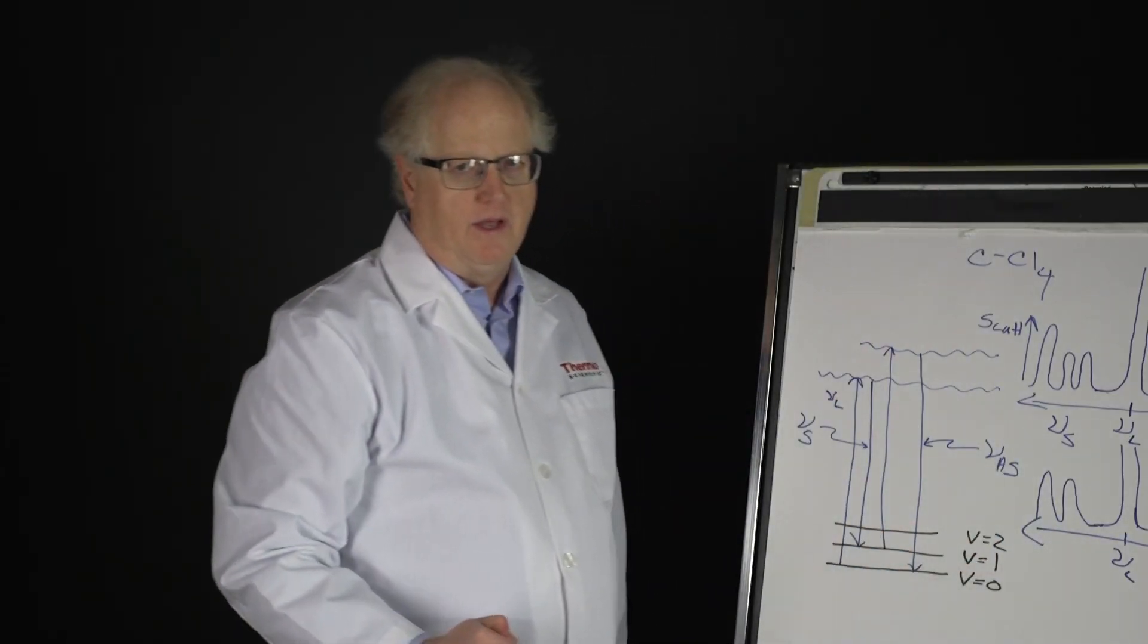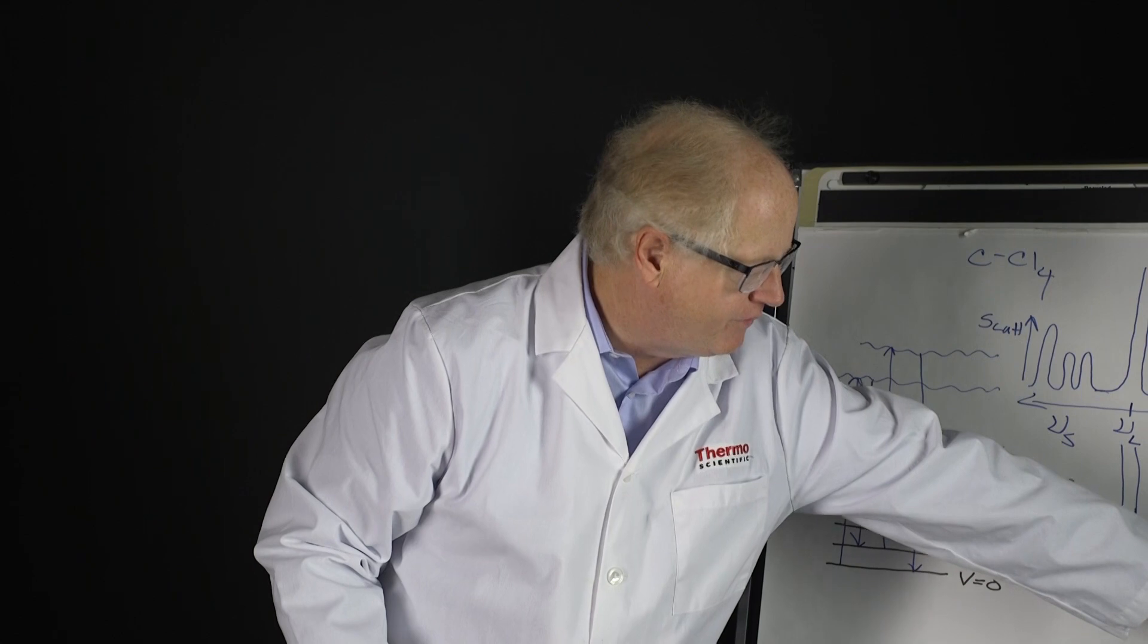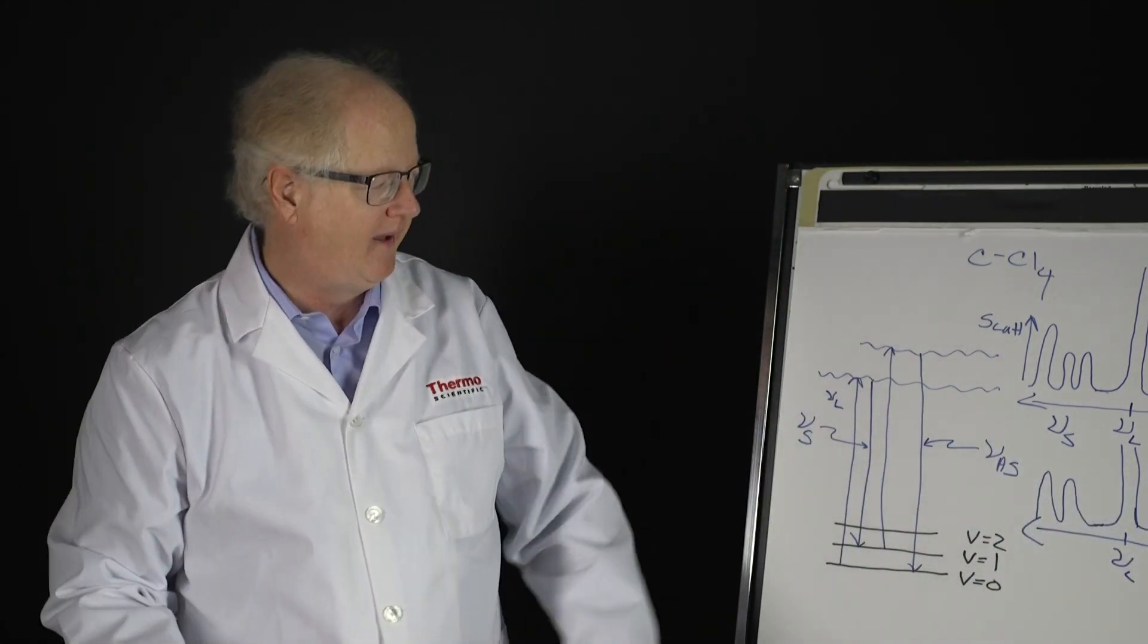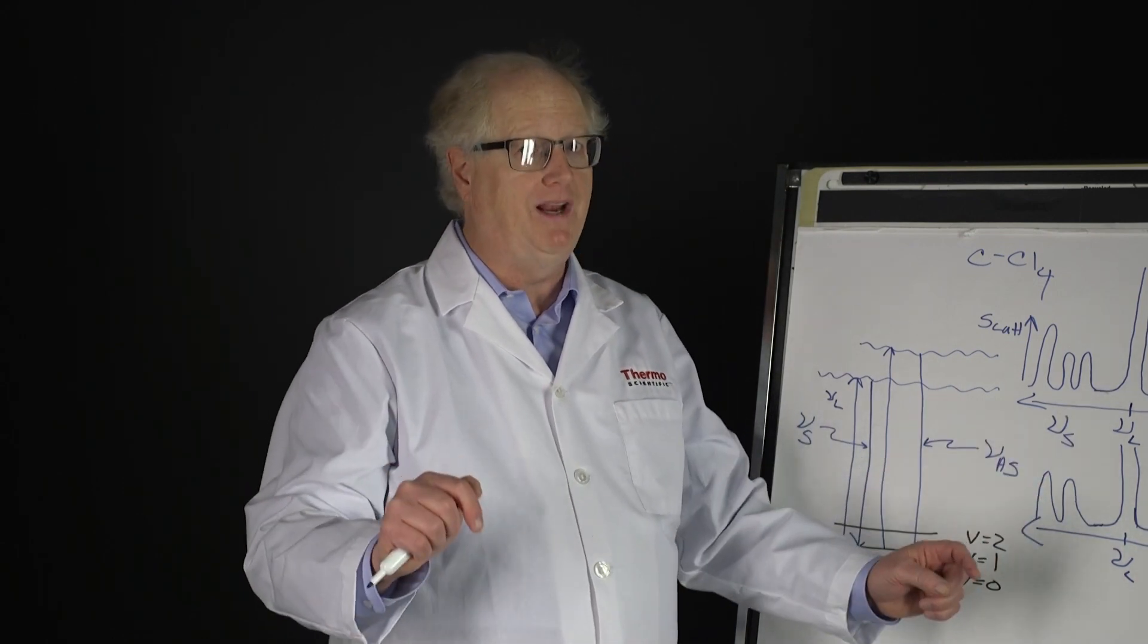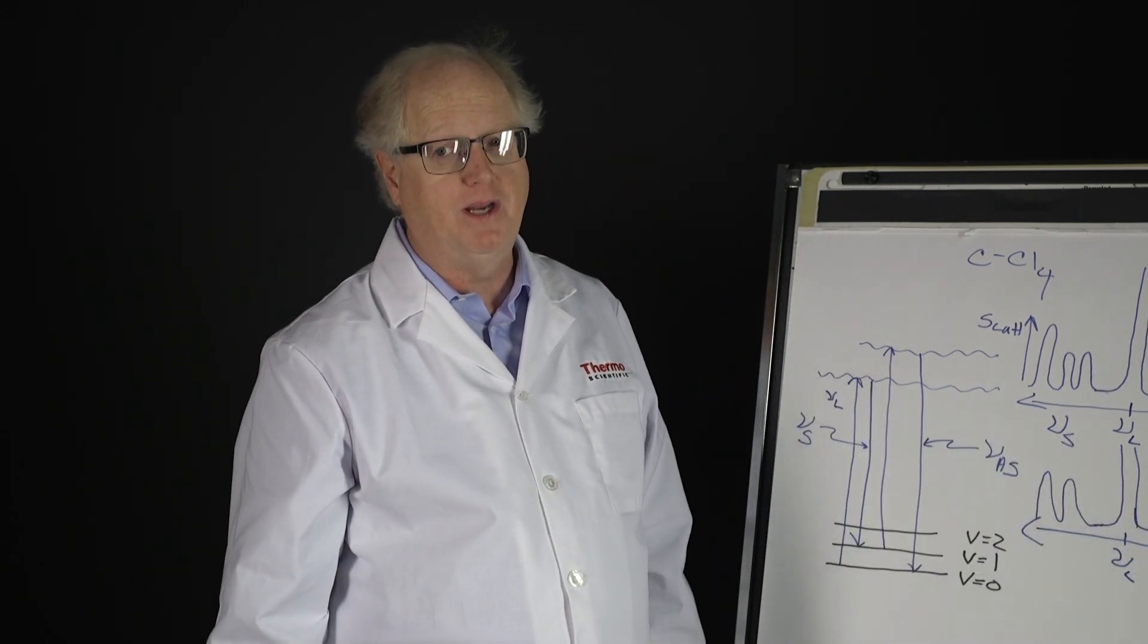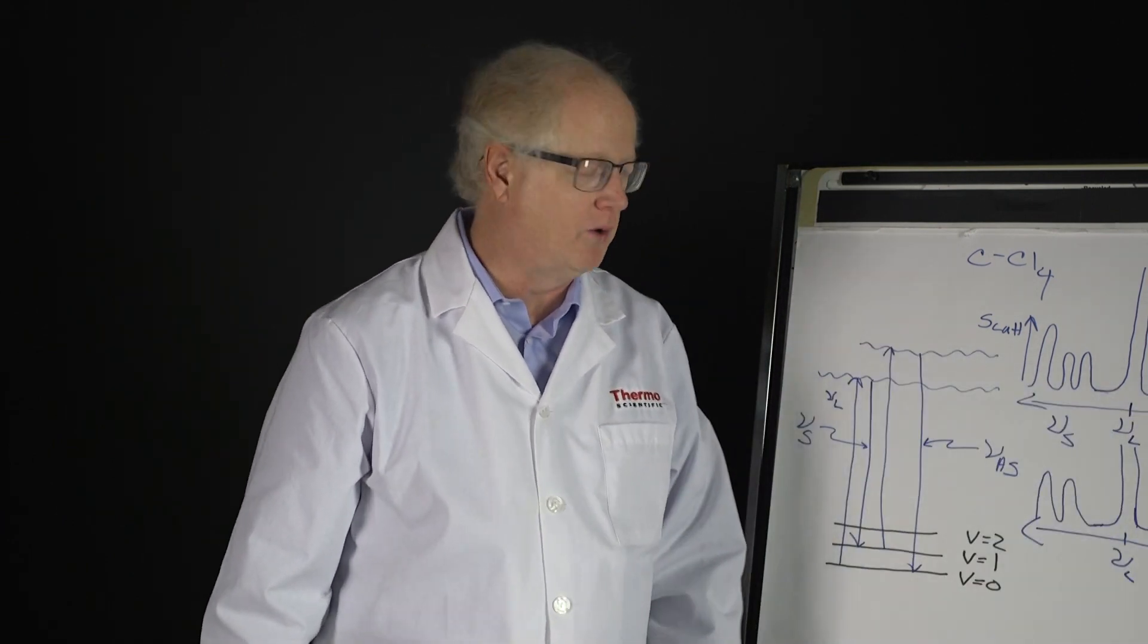They're going to get exponentially smaller than the Stokes side peaks. These are going to be bigger. So what's happening is, as you go out further and further onto the anti-Stokes side, your intensity is dropping away, and therefore what seemed to be like a good idea of how to get rid of fluorescence turns out not to be so good.